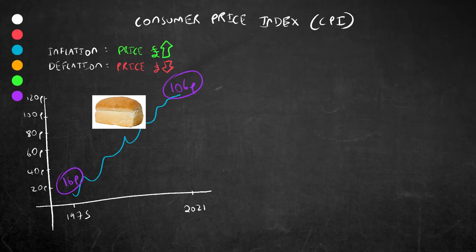As prices rise, this means that the currency's purchasing power decreases. Using the same example, 106p nowadays could buy you six and a half loaves of bread back in 1975, whereas now it can only get you one.